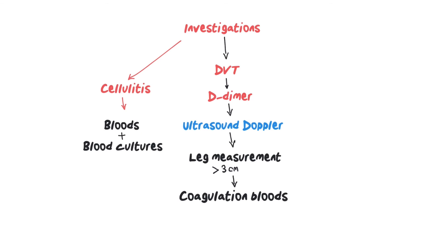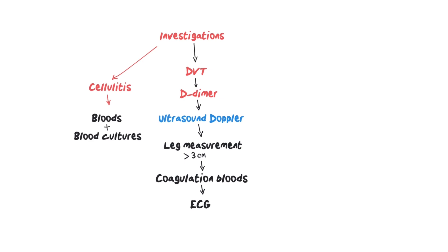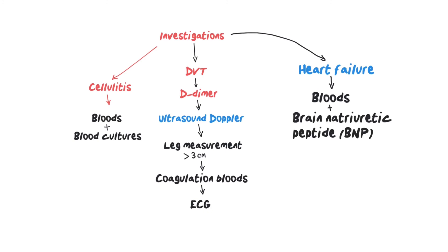For heart failure, request routine blood tests — full blood count, LFTs, ESR, CRP, and thyroid function tests — but the key marker is BNP. You can also request a chest X-ray to assess heart size and rule out lung infection, since you may hear crackles on examination. Finally, you can request an ECG.